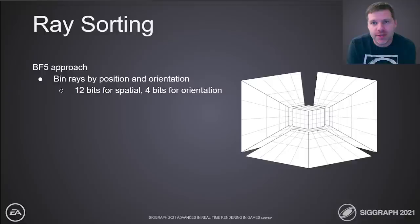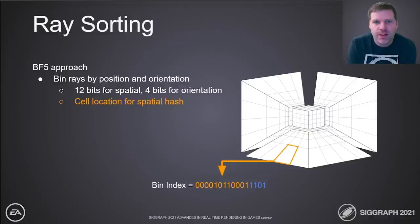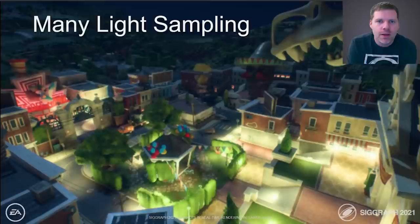Shooting rays with little spatial coherence causes poor performance on most platforms — executing threads go down very different parts of the acceleration structure, resulting in poor cache utilization. To alleviate this, we use a sorting strategy similar to Battlefield V, known as ray binning. We bin rays based on their position and orientation, using the surfel cell coordinate converted to 1D as the dominant spatial hash, combined with the ray direction as the other part of the bin index. We run two passes to generate reordering information, followed by a final pass that reorders the rays based on the calculated bin counts and offsets.